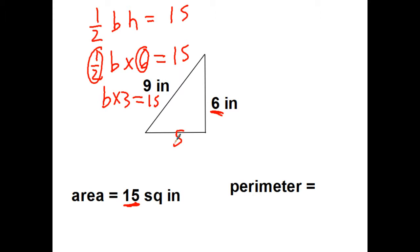So now I can find the perimeter. All I have to do is add all the sides. 9 plus 6 plus 5. 15. 20 inches.